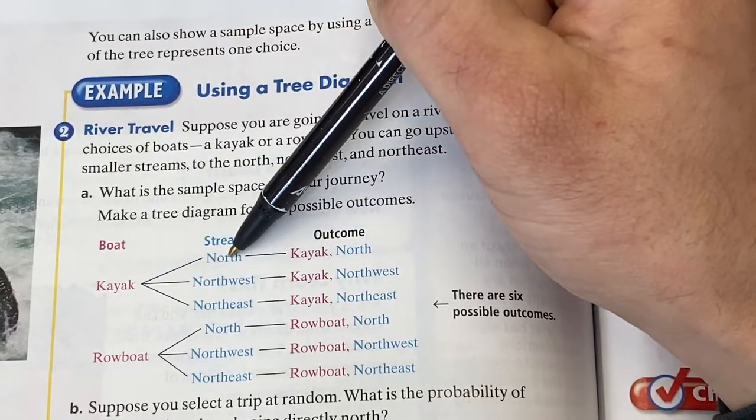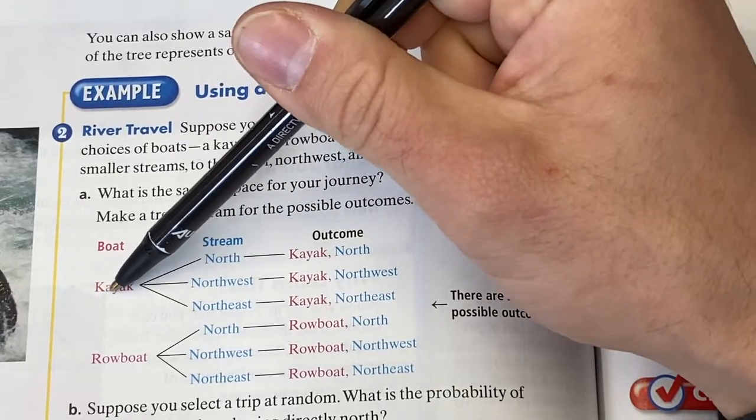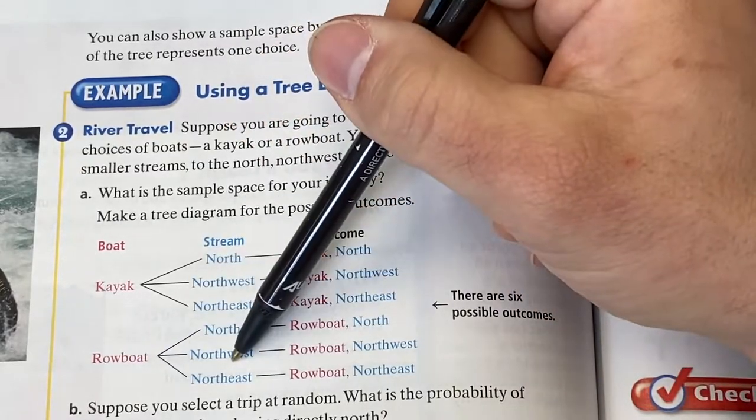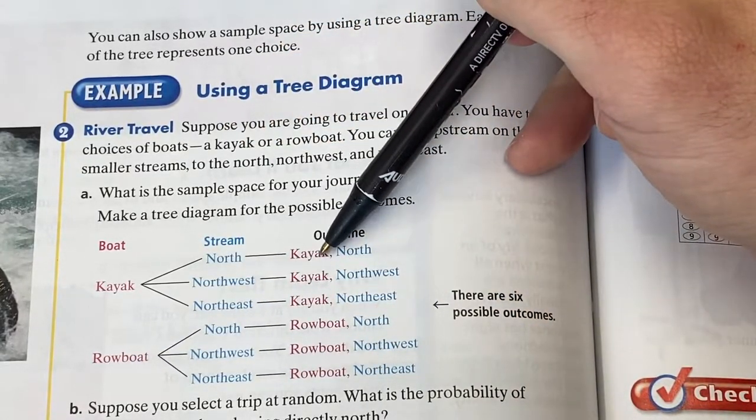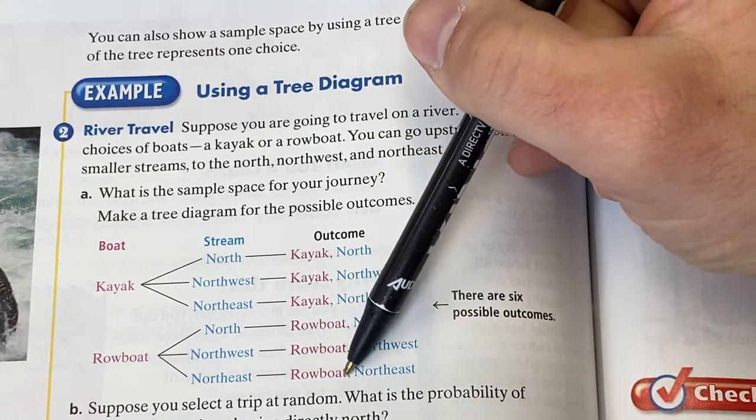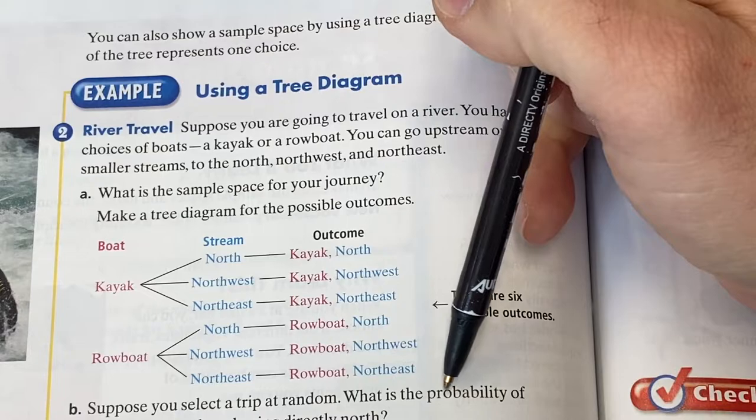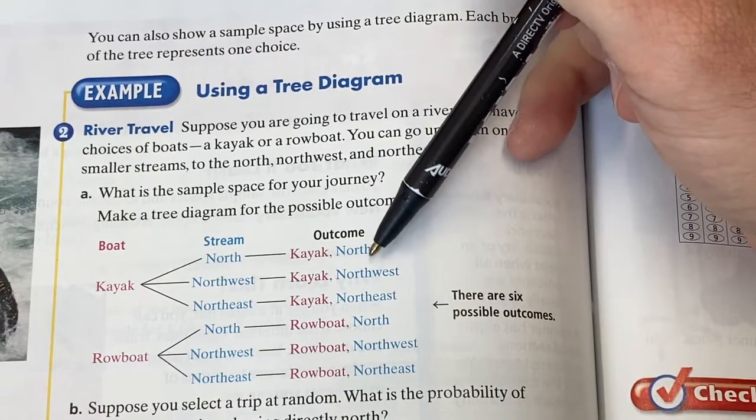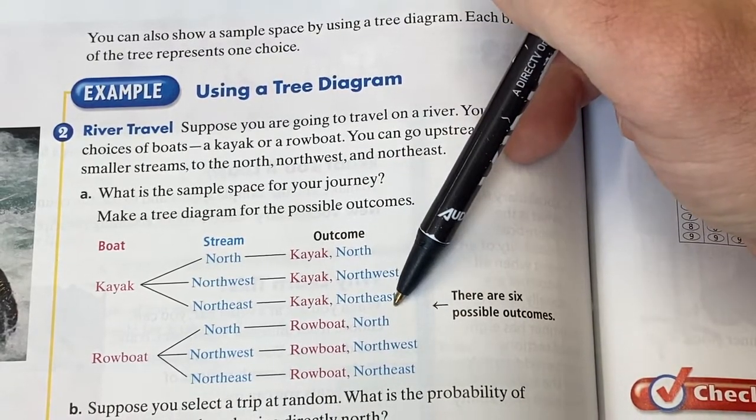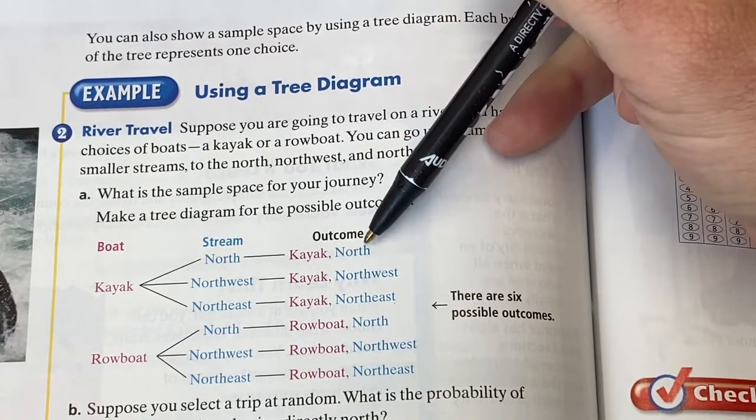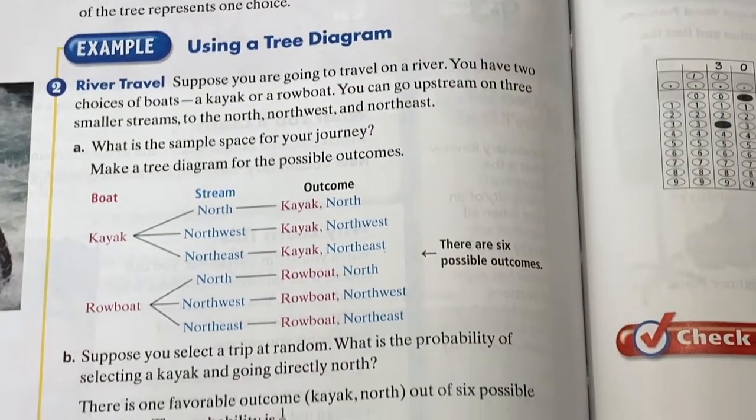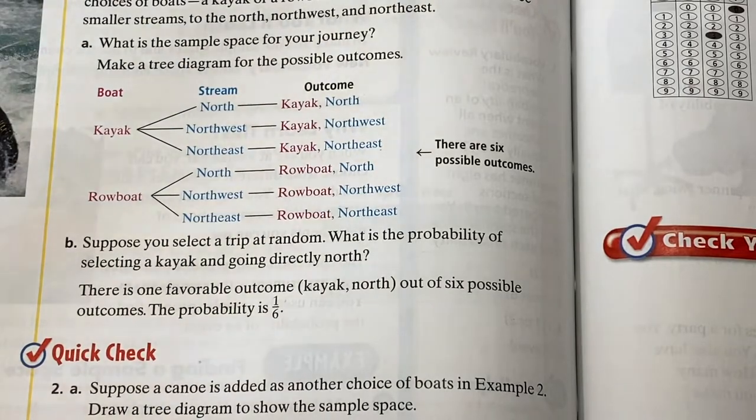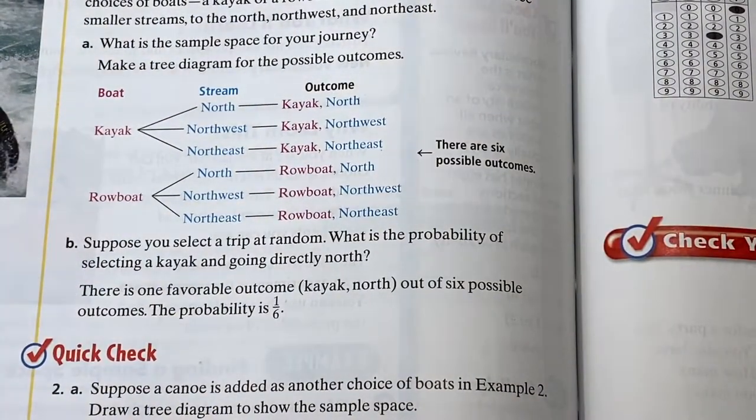If you go from beginning to end, that gives you an outcome. So we could have kayak north, kayak northwest, kayak northeast, rowboat north, rowboat northwest, rowboat northeast. How many outcomes are here? One, two, three, four, five, six. If we pick a trip at random, what's the probability of getting kayak going north? Well, how many of these six outcomes say kayak north? Only that one. Northwest, northeast is not the same as north. They were asking about directly north. Just one, one out of six. That's it. One out of six.